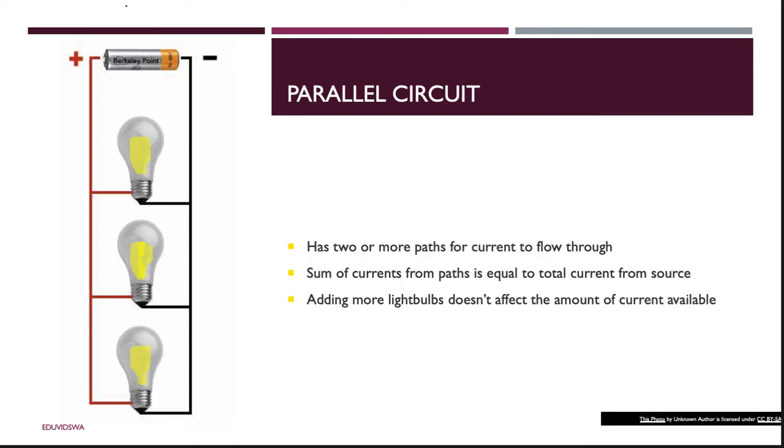In parallel circuits, however, there are two or more paths for the electric's current to flow through. The sum of the currents from all of the paths is equal to the total current from the original energy source, so each light bulb's current adds up to how much the battery has.